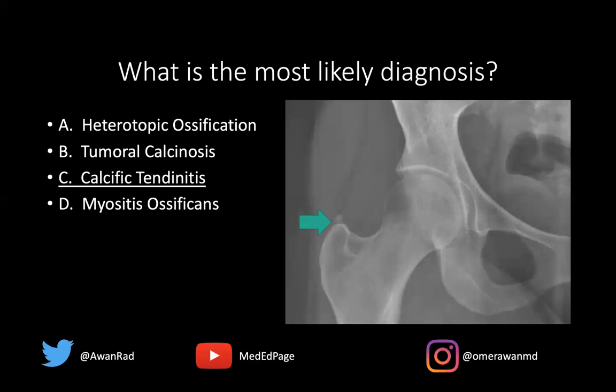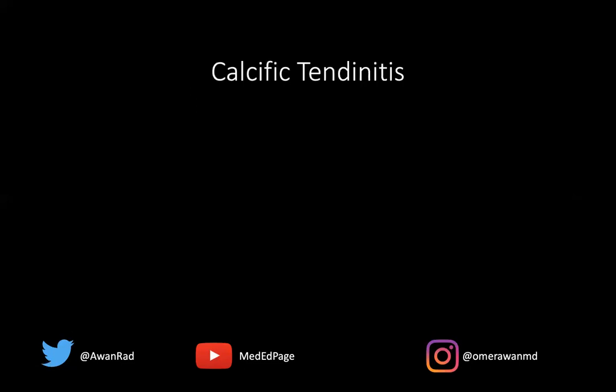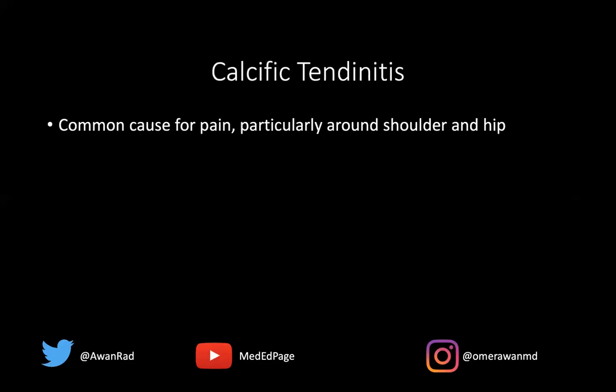So the best answer here would be calcific tendinitis, as you see in this case. This is a common cause of pain, particularly around the shoulder and the hip. The shoulder is the most common place to get it, the hip would be the second most common. As you see here, the gluteal tendon is involved.